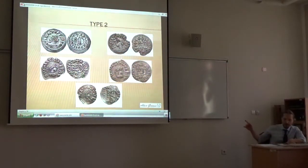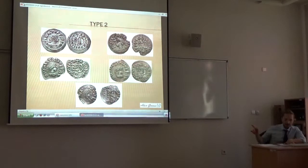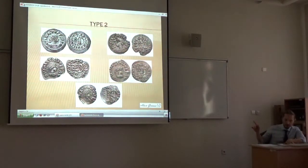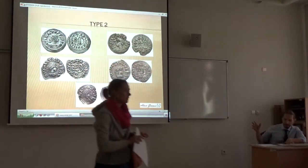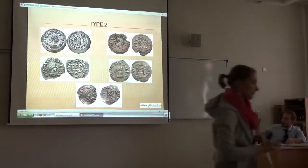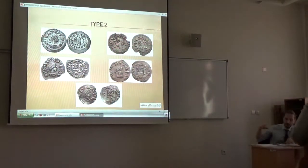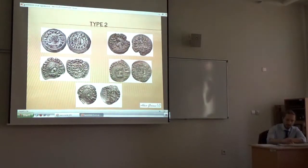The obverse legend in the name of Anastasius, the reverse legend referring to Invicta Roma, and the Theoderic monogram on the reverse. Type 2 is, in fact, imitative of the Ostrogothic Italian coinage.